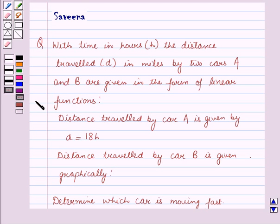Hello and welcome to the session. In this session we will discuss a question which says that with time in hours h, the distance travelled d in miles by two cars A and B are given in the form of linear functions.